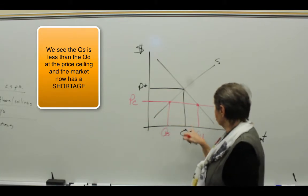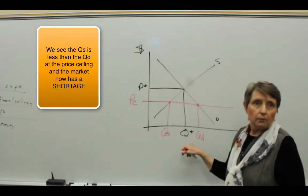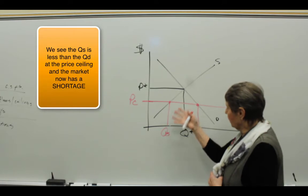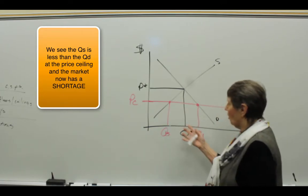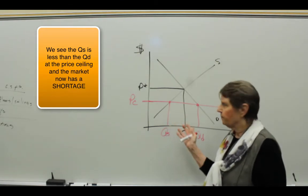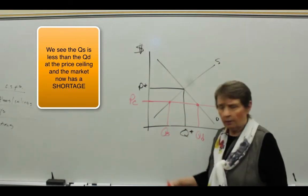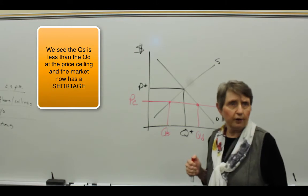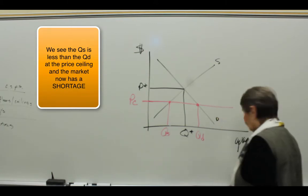So we end up with a shortage of apartments. The government does this - again, the goals are lofty. It's not that they're trying to disrupt this market, but sometimes their solutions don't work very well. Another case where government, often with good intentions, messes up the market is if they impose a price floor.